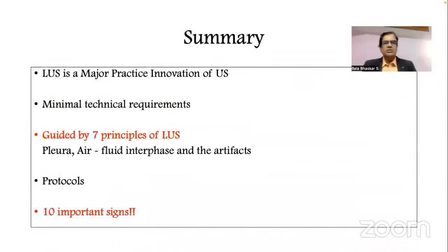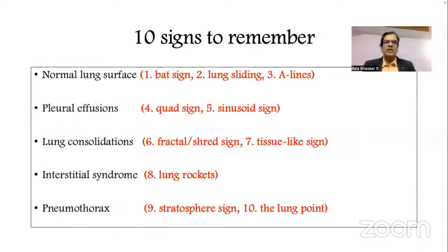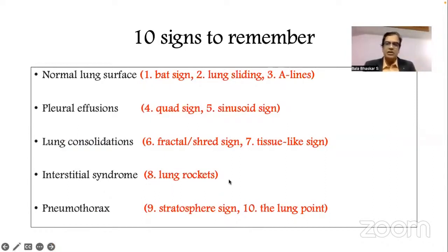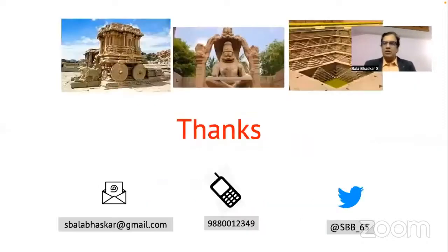In summary, lung ultrasound is a very important advance in modern anesthesia practice with minimal technical requirements, guided by seven principles. The pleural line is paramount, the air-liquid interface is key, and artifacts are deliberately interpreted. Ten important signs to remember: for normal lung — bat sign, lung sliding, and A-lines; for pleural effusion — quad sign and sinusoidal sign; for consolidation — shred sign and tissue-like sign; for interstitial syndrome — lung rockets (comet tails); and for pneumothorax — stratosphere sign and lung point. Thank you to the organizers.